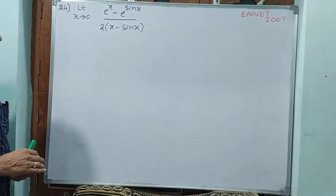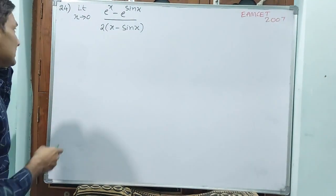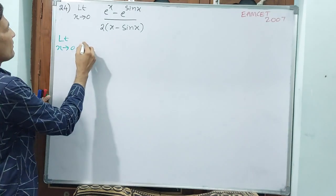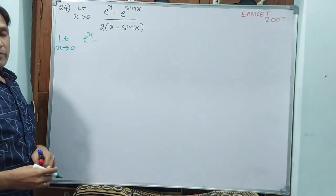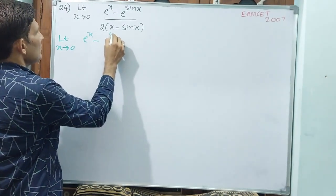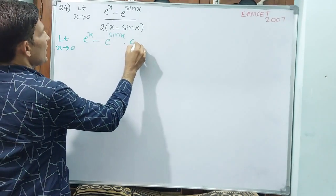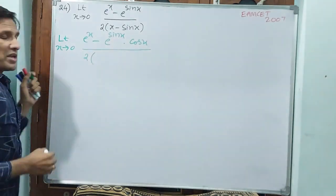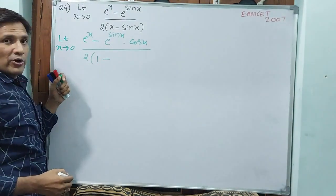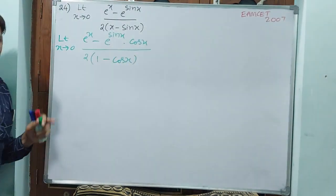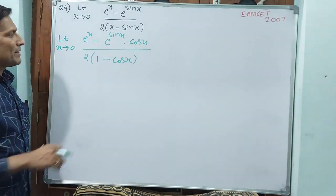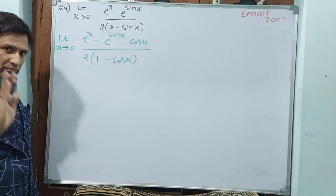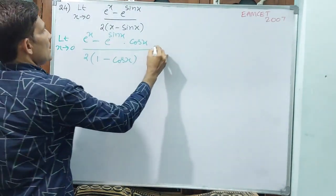First differentiation of the numerator: d by dx of e power x is e power x, minus d by dx of e power sin x gives e power sin x times cos x. Denominator: d by dx of x minus sin x gives 1 minus cos x. But applying 0: cos 0 is 1, so 1 minus 1 equals 0 in the denominator — undefined. So we cannot stop here; we go to the next step.